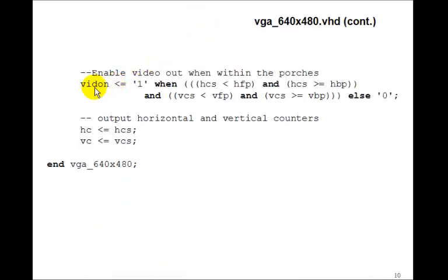We'll compute video on. That's going to be equal to 1 when the horizontal counter is less than the front porch and greater than or equal to the back porch, and when the vertical counter is less than the vertical front porch and greater than or equal to the vertical back porch. Otherwise, it's 0.